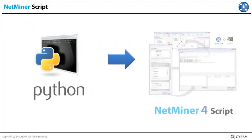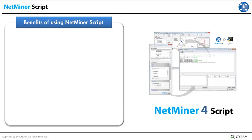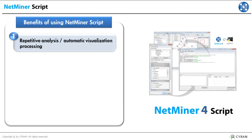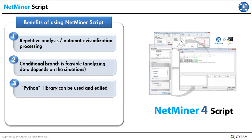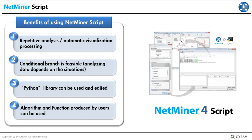The script features included in Netminer 4 is Python-based script which lots of people in the world are using now. It guides users to use Netminer more effectively. By using Netminer script, we can automatically analyze data and automatically visualize processes repeatedly. Netminer script also allows conditional branching. Using and editing Python library is possible and moreover, algorithm and function made by users can be used too. So let's see how the script runs.